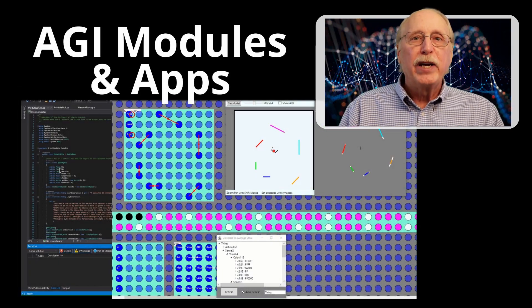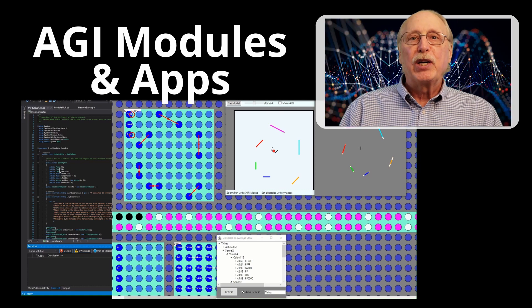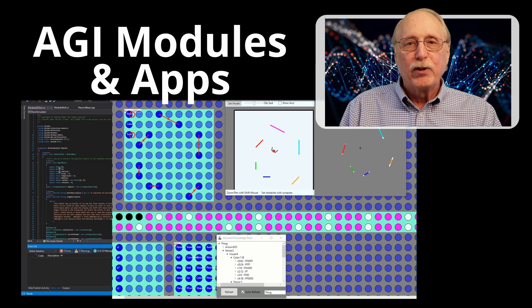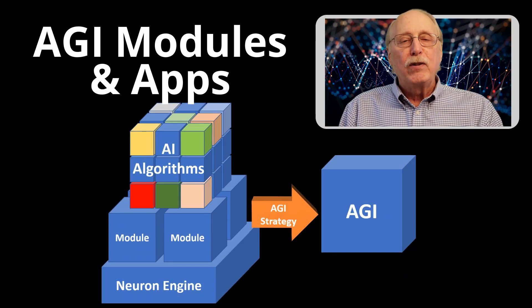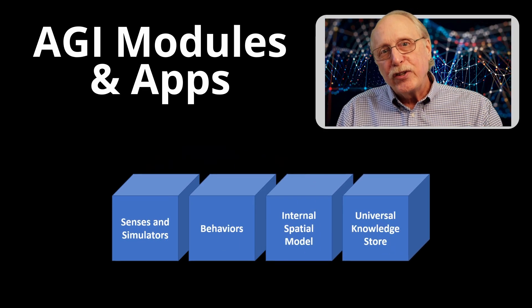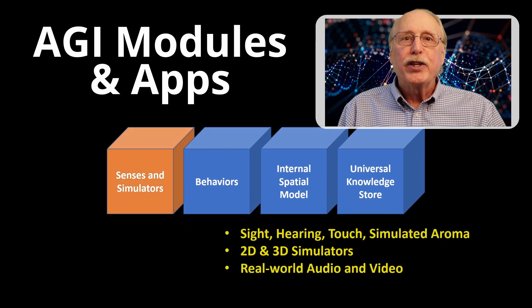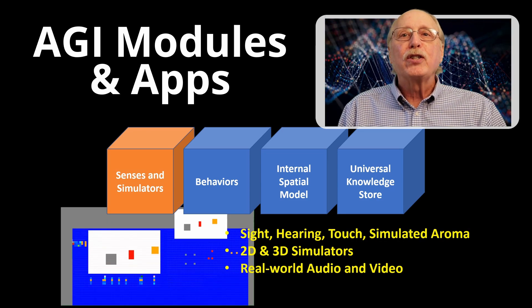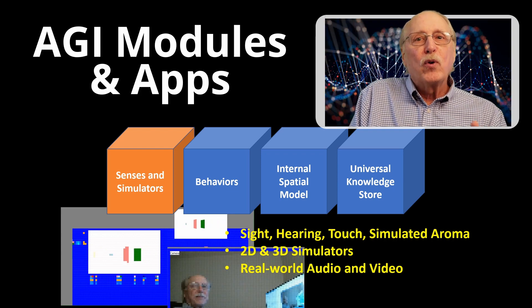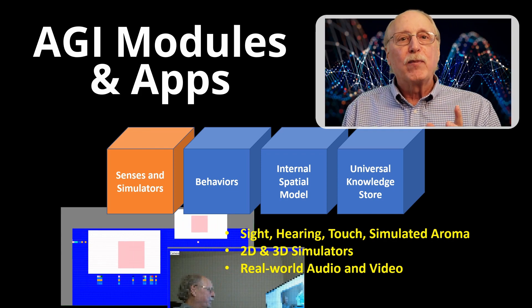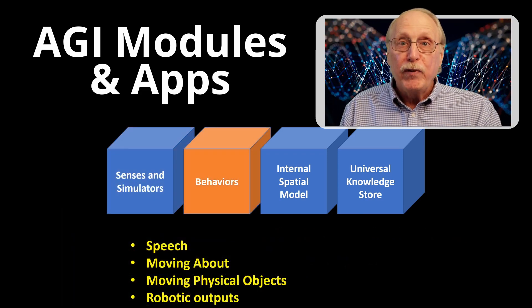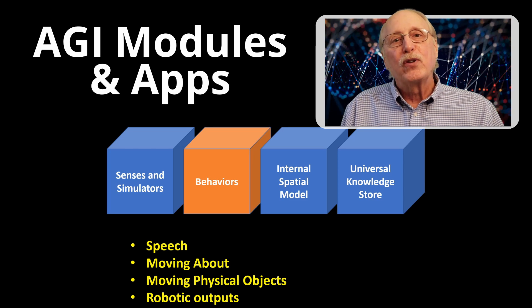Built on the neuron array, modules can speed experimentation by letting custom code perform any useful function on a cluster of neurons. The Brain Simulator project currently includes over 50 modules with functions for the senses of touch, vision, and hearing. For development, there are simulators in two and three dimensions and for the real world, there are modules for robotics and camera and microphone input. The behaviors of speech, moving about, and moving objects in the environment have also been implemented.